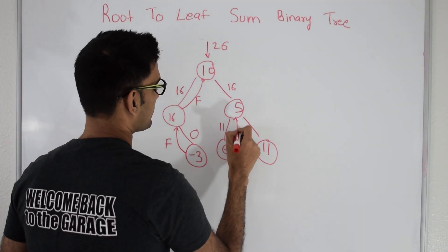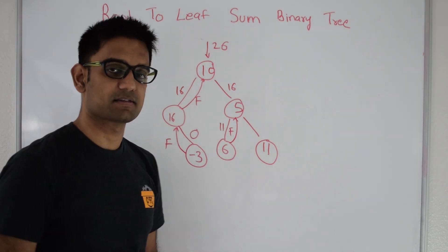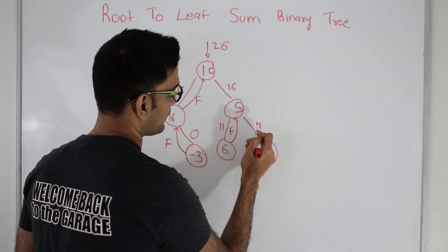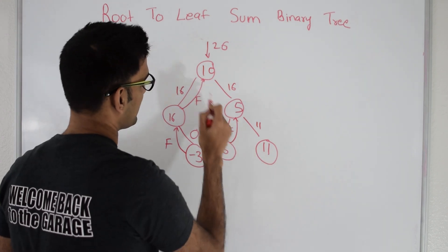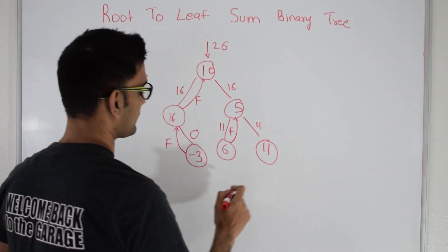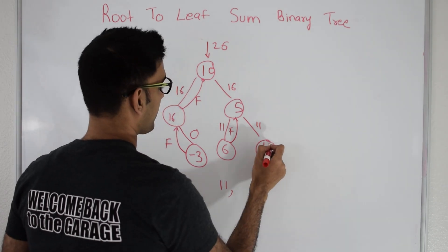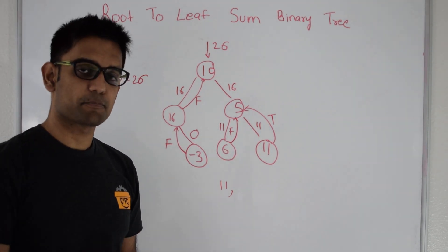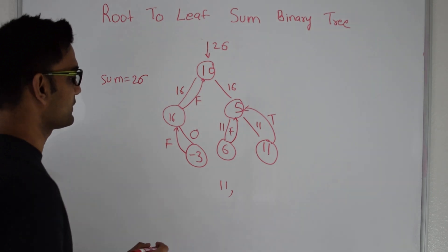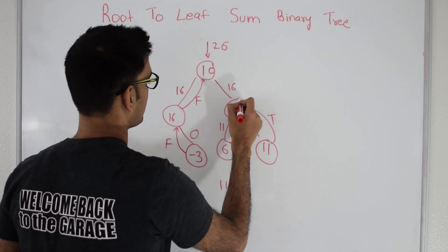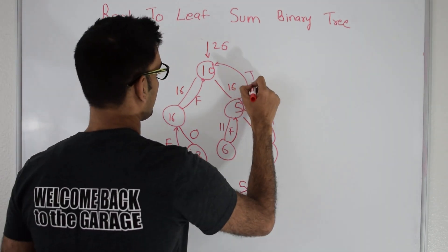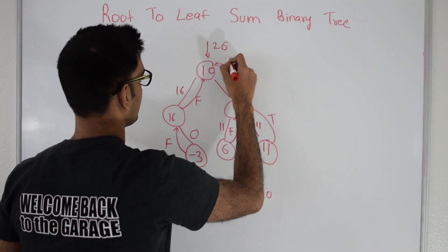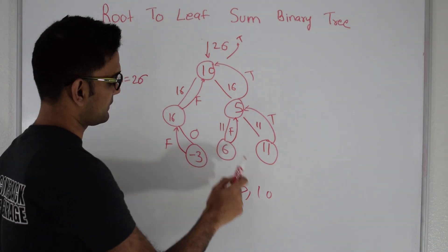Node 6 returns false to node 5. So node 5 looks on its right side and passes 11 to node 11. The value at that node is the same as 11, meaning we found a path: 10, 5, 11 such that the sum is 26. We store 11 in the final result and return true to node 5. Node 5 stores itself into the final result and passes true up to node 10. Node 10 is on the path and passes true to the calling function.